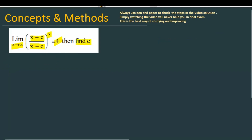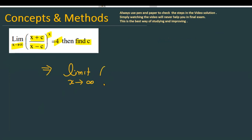Let's see how we are going to solve the given problem. The question has been given: limit x approaching to infinity of (x plus c divided by x minus c) raised to the power x. The information provided is that the limit of this function is equal to 4.